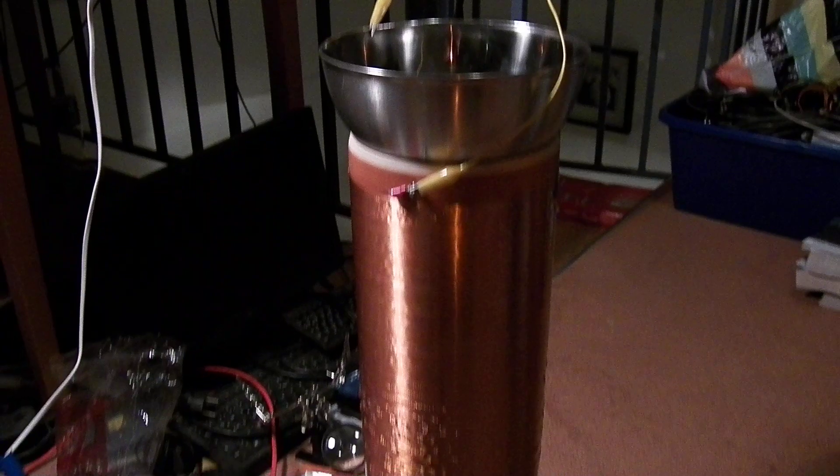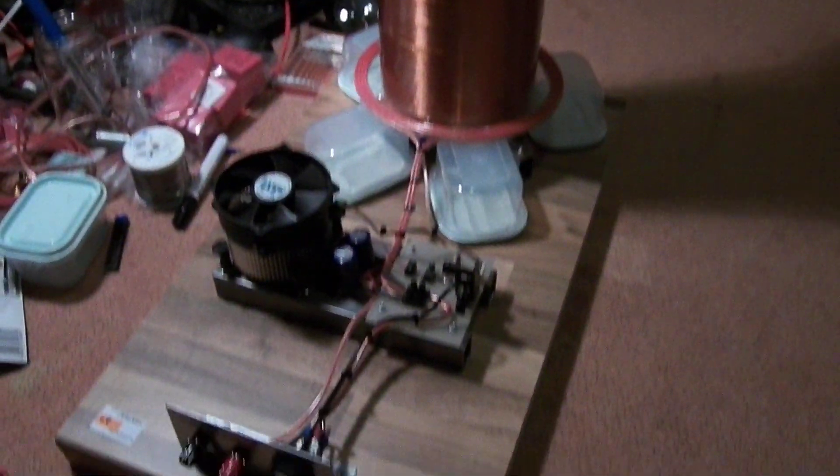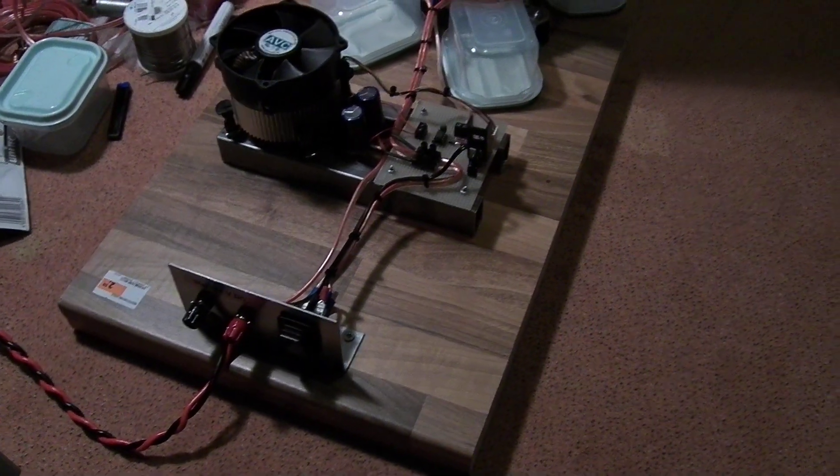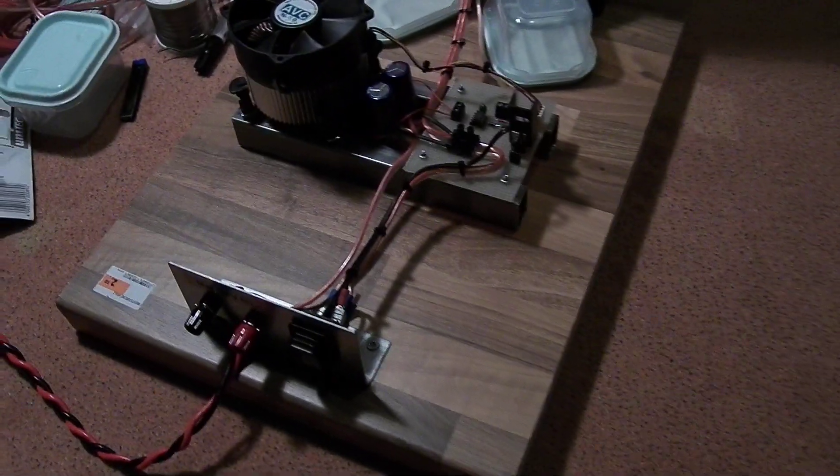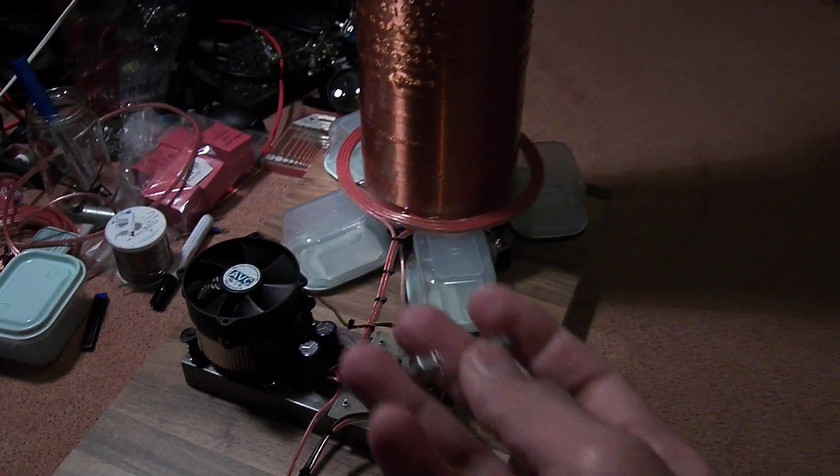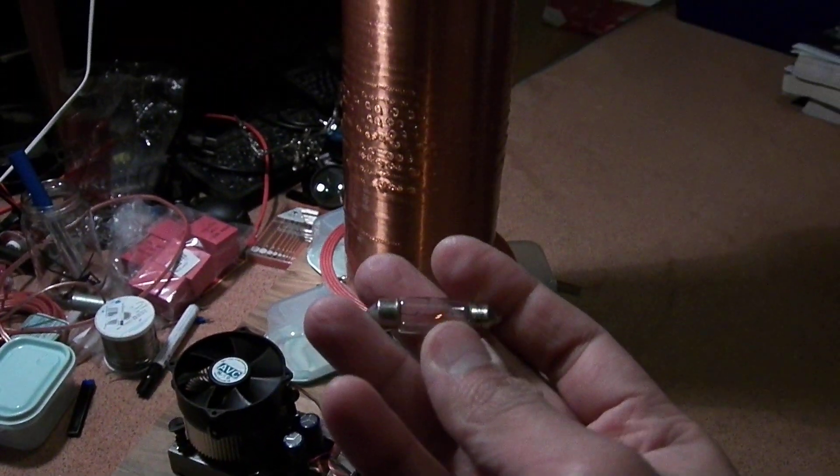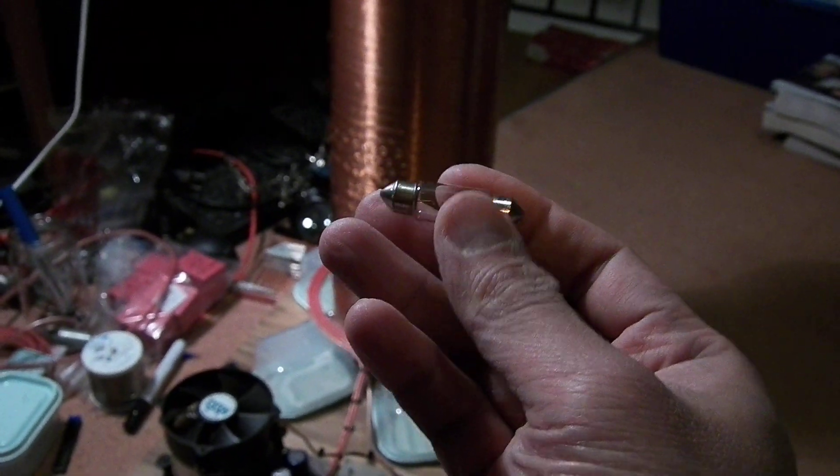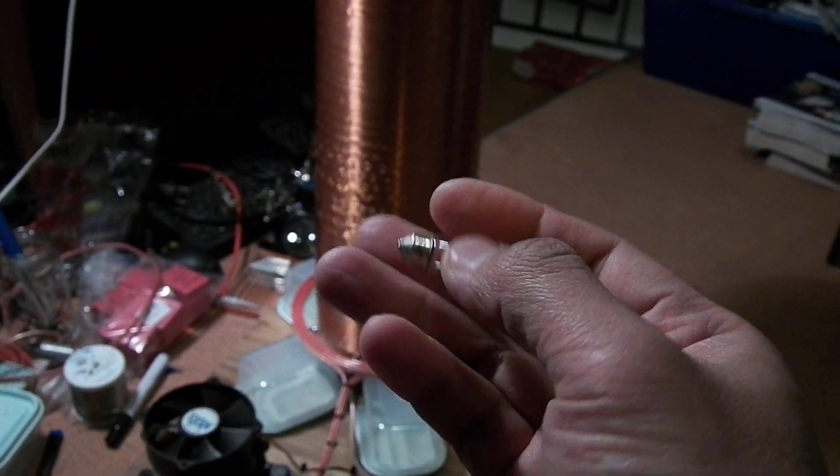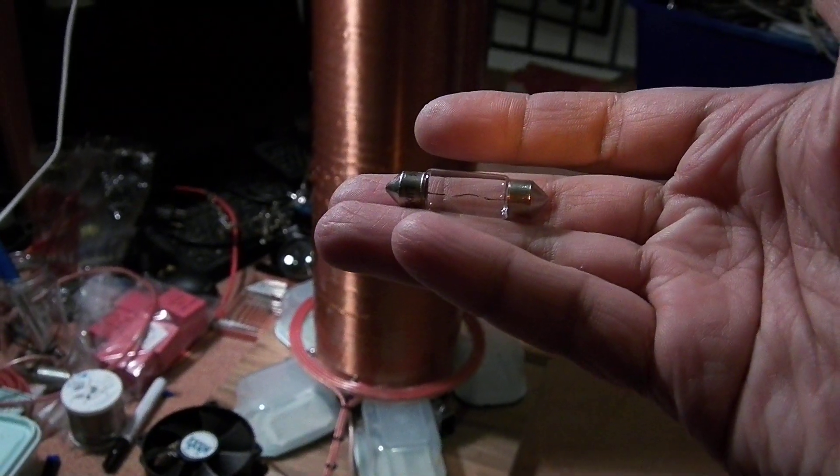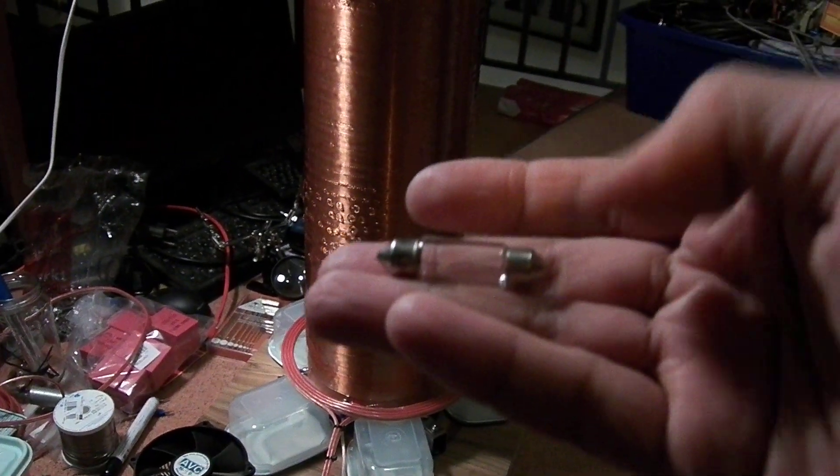Here I have my Slayer exciter and here I have a broken light bulb. This is an automotive light bulb with a broken filament.